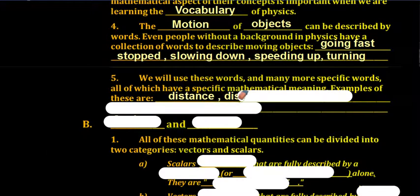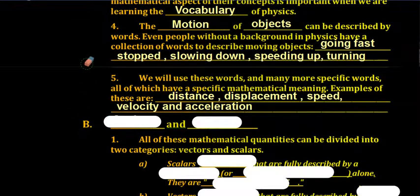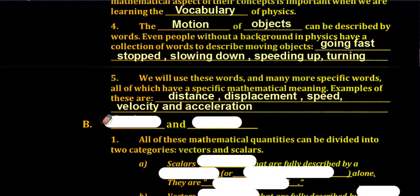Examples of these more specific terms would be distance, displacement, speed, velocity, and acceleration. All of these words can be divided into two major categories: scalars and vectors.